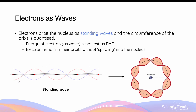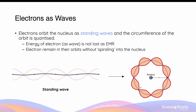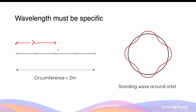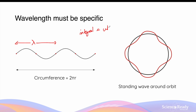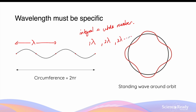Imagine that the black standing wave wraps around the circular orbit described by Niels Bohr in his atomic model. In order for a standing wave to be formed around an electronic orbit, the wavelength of an electron must be specific such that an integral multiple of the wavelengths can fit inside the circumference of the orbit. The word integral means a whole number multiple of the wavelength — so this can be 1 lambda, 2 lambda, 3 lambda, and so on.